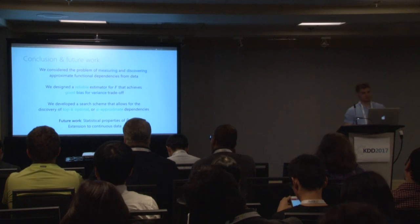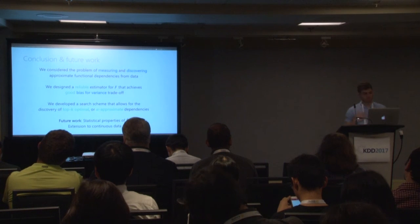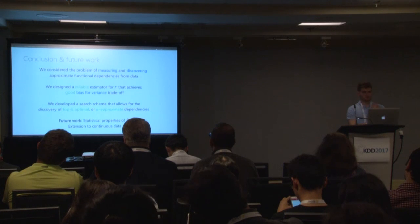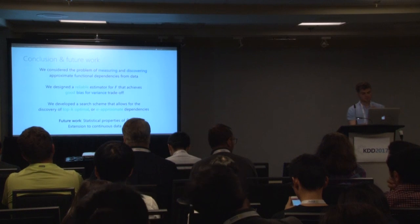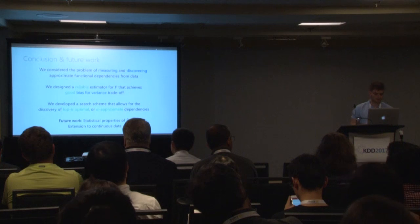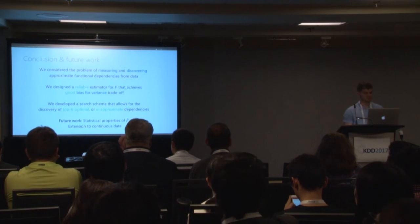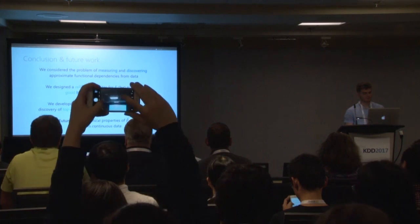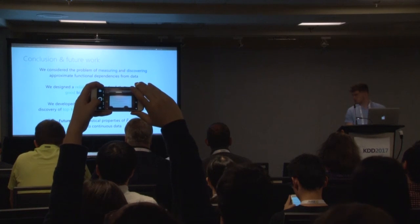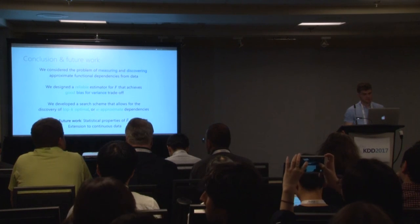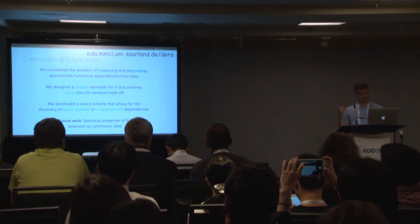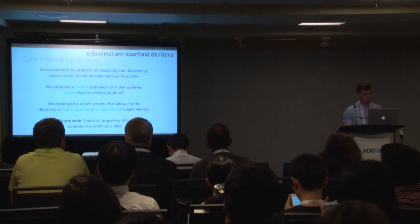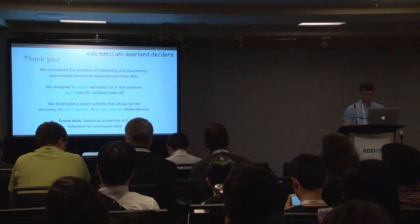To conclude: we considered the problem of measuring and discovering approximate functional dependencies from data. We designed a reliable estimator for F that achieves a good bias-variance trade-off. We developed a search scheme that allows discovery of the top-k optimal and alpha-approximate dependencies. For future work, we want to further investigate the statistical properties of our estimator and extend it to continuous data. The code and paper are available on our website.